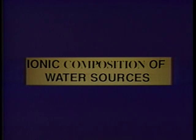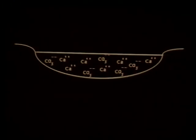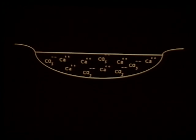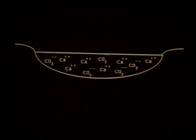Ionic composition of water sources. Water contains many elements and compounds which are dissolved in it. Collectively, the dissolved mineral forms are called ions. For example, limestone or calcium carbonate, when dissolved in water, results in the formation of calcium and carbonate ions. The absence or presence of various ions determines the quality of water in a pond.